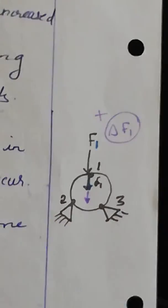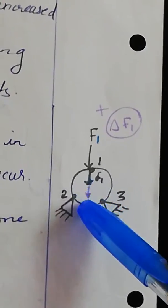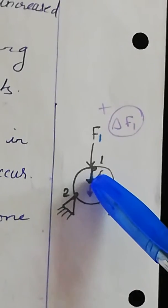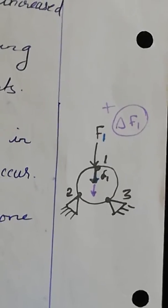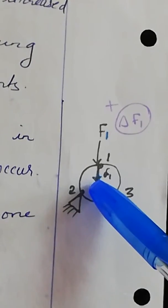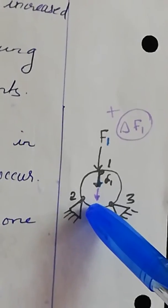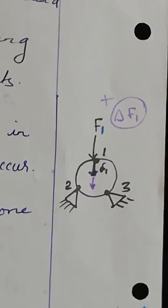This work-absorbing component delta-1 will, after some time, yield a small additional displacement — indicated as delta-delta-1 — with the help of the potential energy stored inside the body during the first application of force F1. This additional displacement delta-delta-1 is shown in the figure.